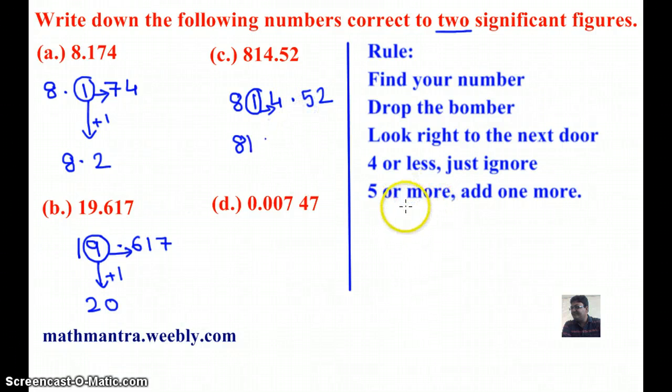When it is 5 or more, we must add 1 to the circle number. So, I'm going to add 1 here, and my answer is 0.815.